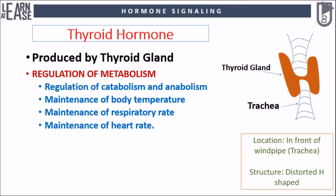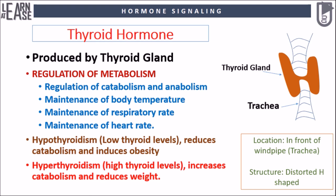Imbalance in thyroid hormone production can cause hypothyroidism and hyperthyroidism. Hypothyroidism represents a reduction in the amounts of thyroid hormone production, causing reduced catabolism and obesity. Increased production of thyroid hormones, called hyperthyroidism, increases catabolism inducing weight loss, increases heart rate and blood pressure.